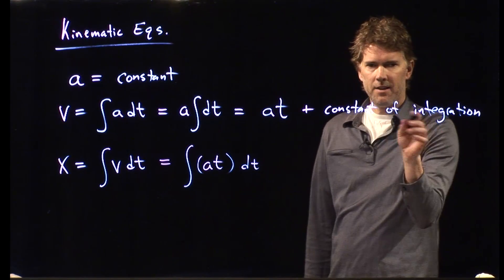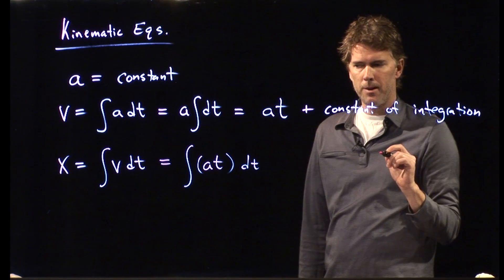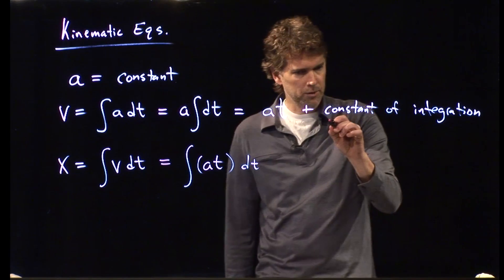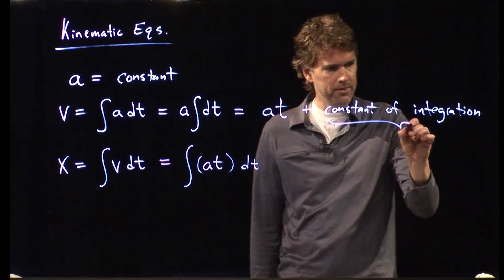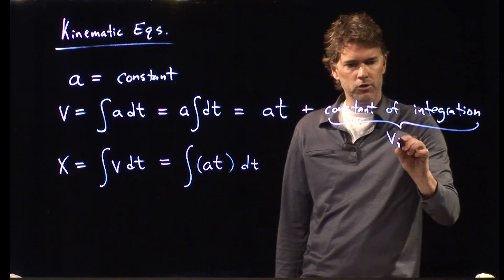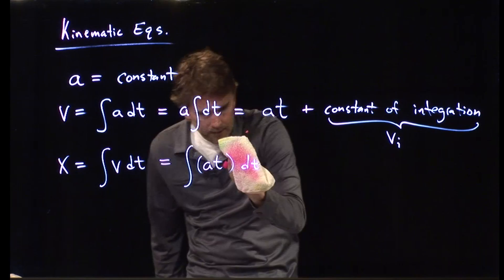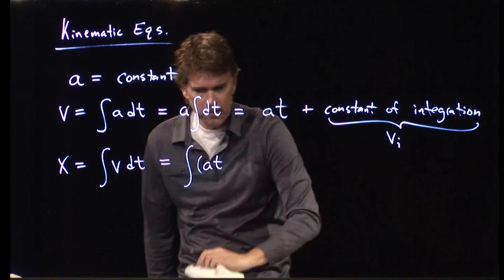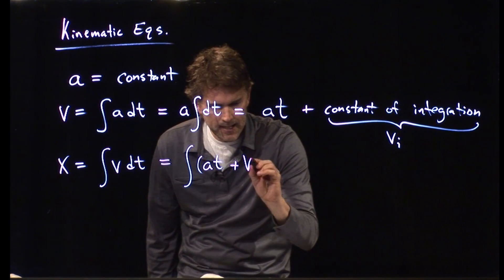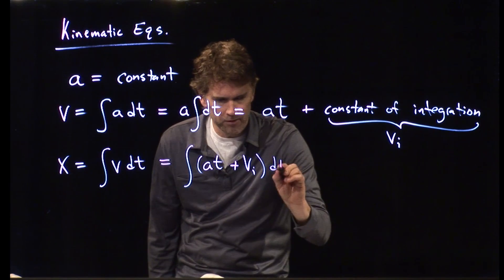But we have this constant of integration here to worry about. So, we have to include that. Let's call that thing initial velocity vi. So, what we should really have here is not just at. We should have at plus v sub i.